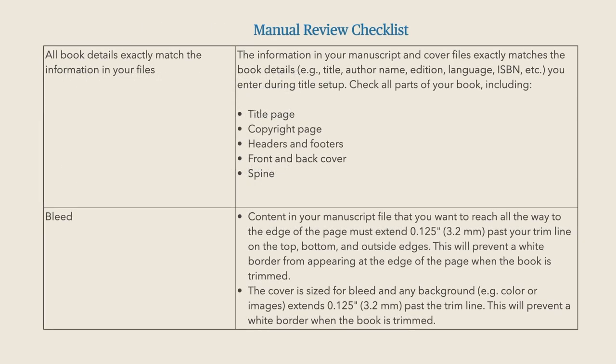Here's your manual review checklist. All book details must exactly match the information in your files. For bleed: contents in your manuscript file that you want to reach the edge of the page must extend 3.2mm past your trim line — that's your bleed — at the top, bottom, and outside edges. The inside edge, which is the binding, doesn't need bleed because that part isn't cut off.